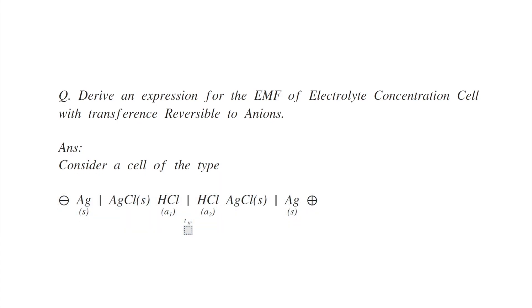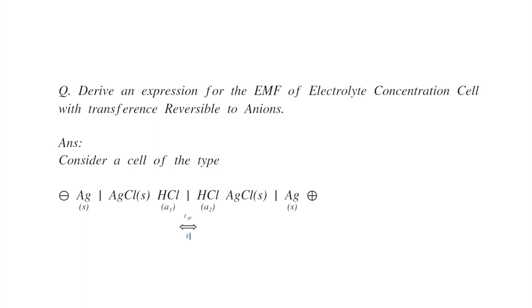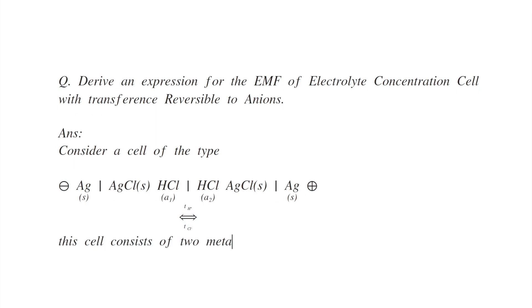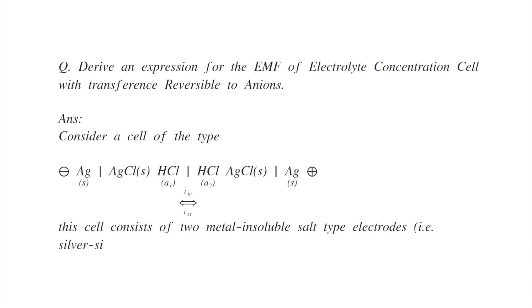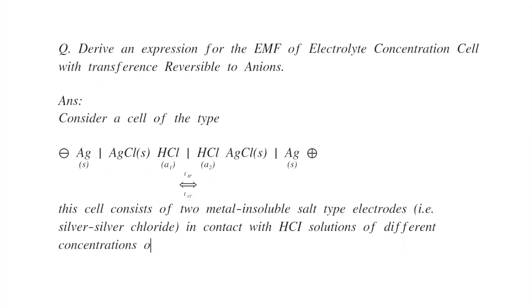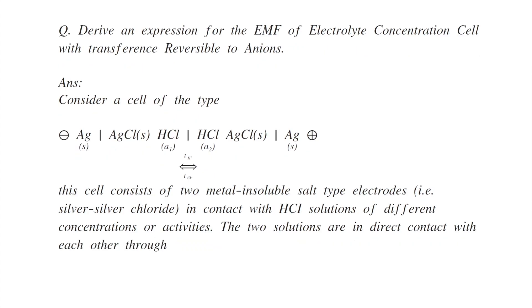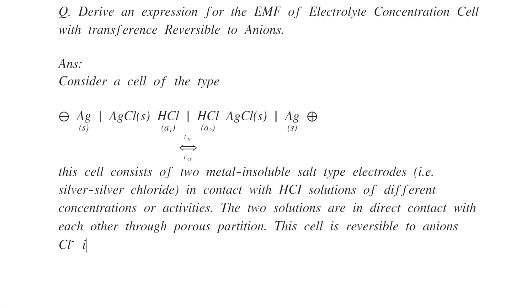This cell consists of two metal insoluble salt type electrodes, i.e., silver-silver chloride electrodes in contact with HCl solution of different concentrations or activities. The two solutions are in direct contact with each other through a porous partition. This cell is reversible to anions, i.e., chloride ions.